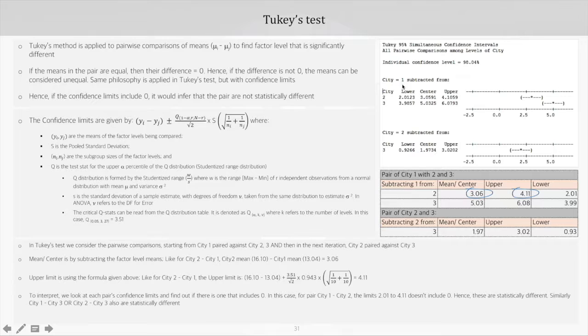Similarly, the city 1 to city 3 comparison and city 2 to city 3 comparison show that zero does not lie between the lower and upper limits. We can say that all three cities are statistically different when it comes to the ambulance response time. Now, this response time is a lower-the-better metric, so we can say that city 1, with the lowest mean of 13.04 minutes, is statistically different from the other two cities and is better in terms of performance.